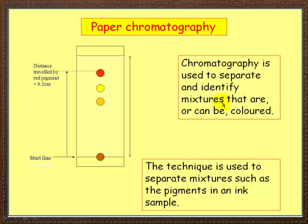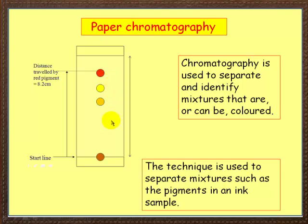The last technique we want to look at is paper chromatography. You probably did this very early on in your school career. What you do is put down here a little dot of ink — you might use Smarties for example. Here's a start line, and what happens is that a solvent travels up through the paper. As it does so, it carries the colours with it and the colours separate according to their density. You can actually measure how far they go and work out what's called an RF value, which we'll come onto in another video.